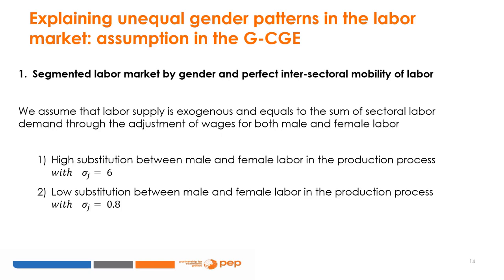Labor supply is still exogenous at this stage. We make different assumptions and analyze the simulation results. In our first assumption, the labor market is segmented by gender, with perfect intersectoral mobility of labor. We assume that labor supply is exogenous and equals the sum of sectoral labor demand through the adjustment of nominal wages for both male and female labor. Two situations are considered under this first assumption.